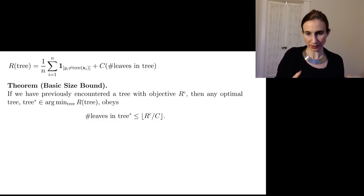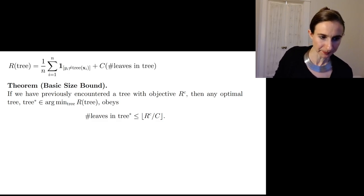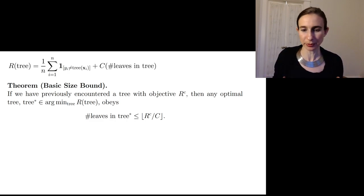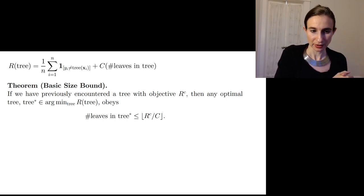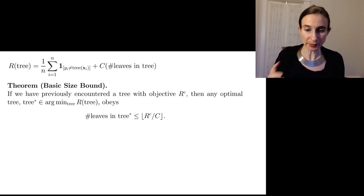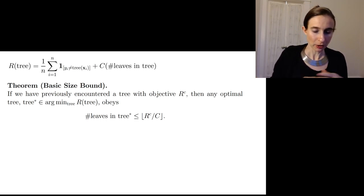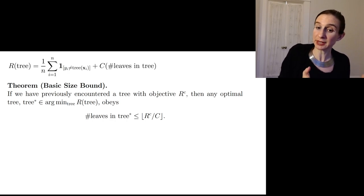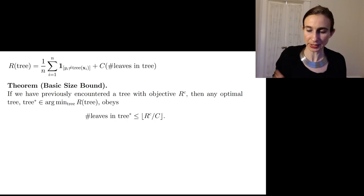All right, so this is again our objective, which is misclassification error traded off with sparsity. Now, this is a very simple theorem. It's called the basic size bound. And it says that if somehow we've previously encountered a tree with an objective value that was R^C, so in other words somehow in our traversal so far we've come up with a tree that has an objective value R^C, then any optimal tree tree star, which is a minimizer of the objective, obeys this theorem. So it says that the number of leaves in this optimal tree, so the number of leaves in any optimal tree is less than or equal to R^C over C floor.